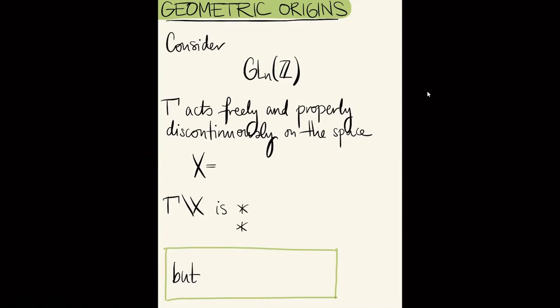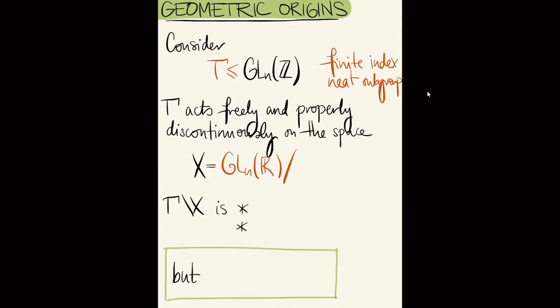I want to introduce you to the Reductive Borel compactification. Consider the general linear group over the integers — specifically a finite index neat subgroup gamma. If you don't know what neat means, think of it as being very torsion-free: not just gamma itself, but various subquotients need to be torsion-free. This group gamma acts freely and properly discontinuously on the space X = GL_n(ℝ) modulo positive scalar matrices and the orthogonal group, where A is simply a copy of the positive real numbers.